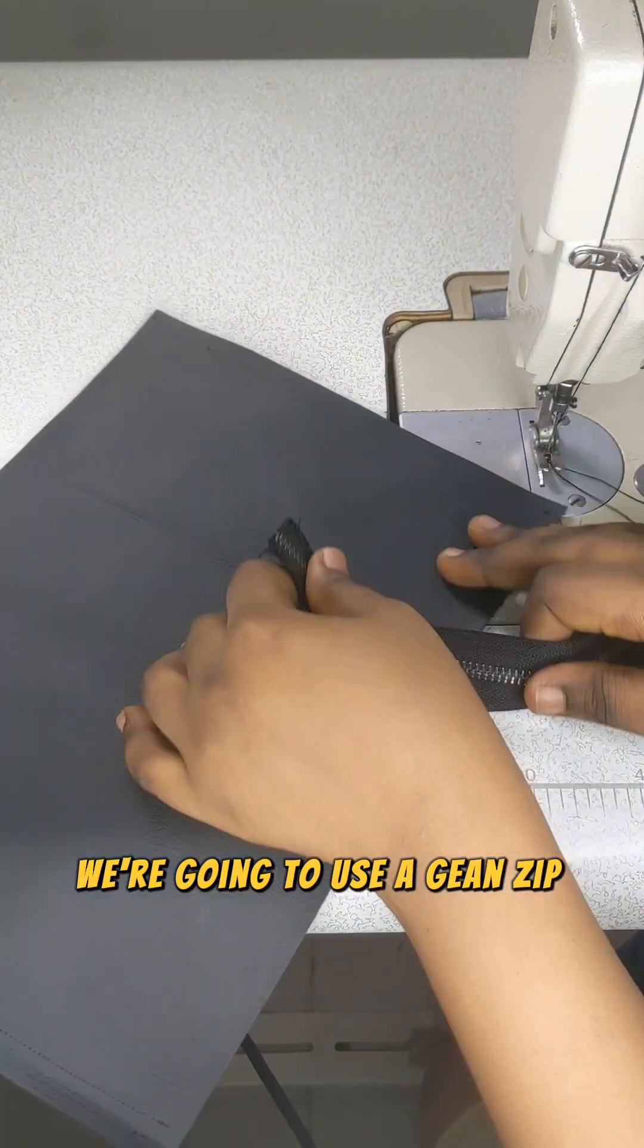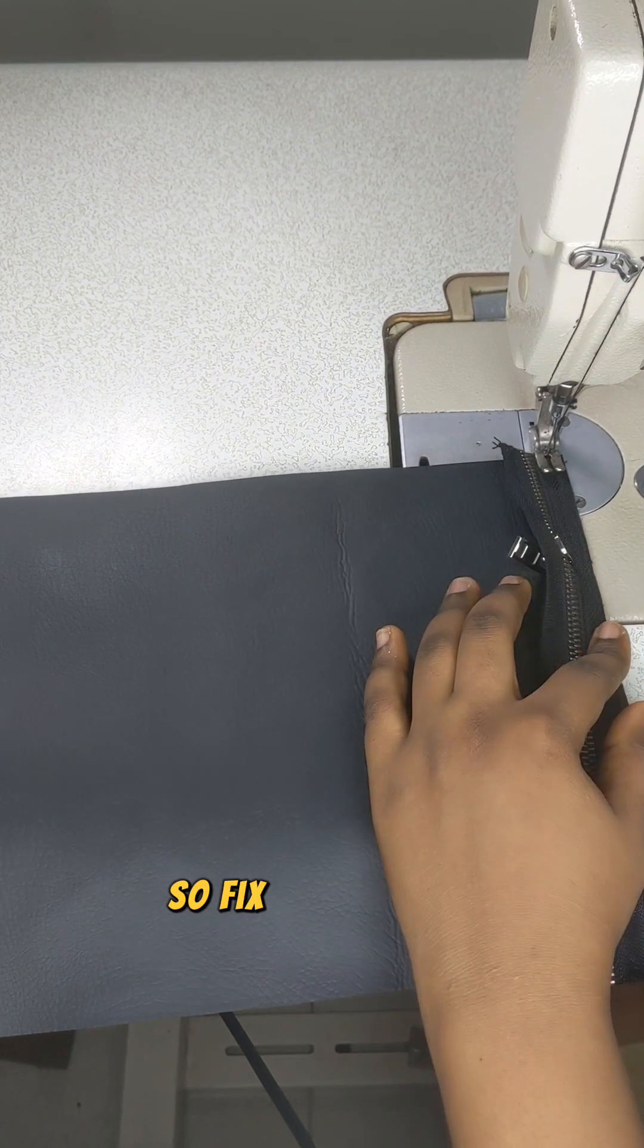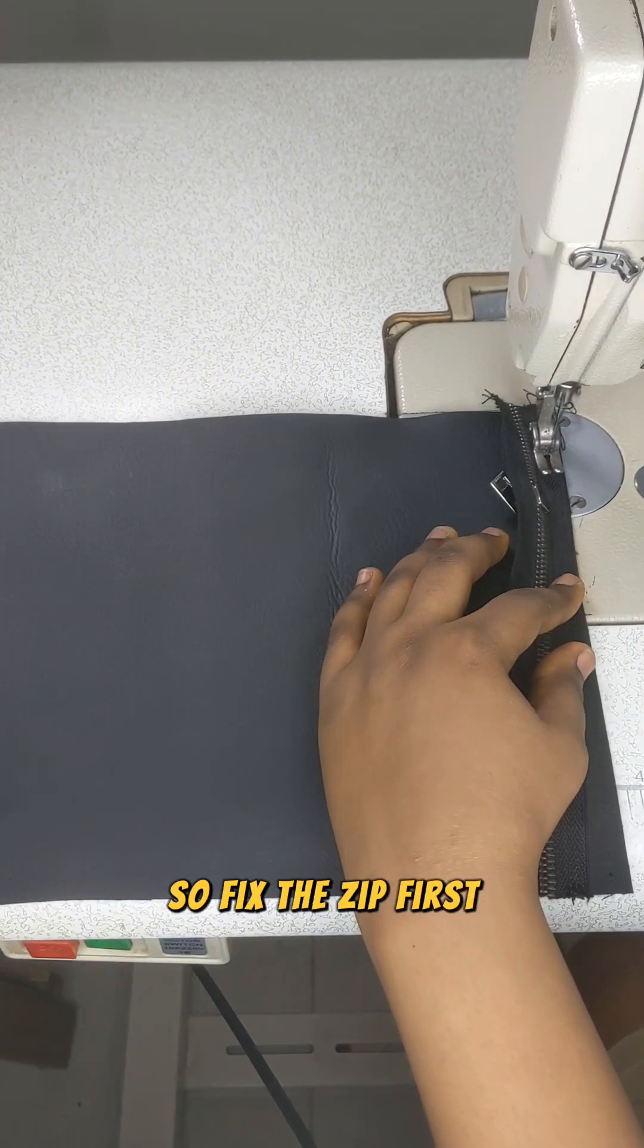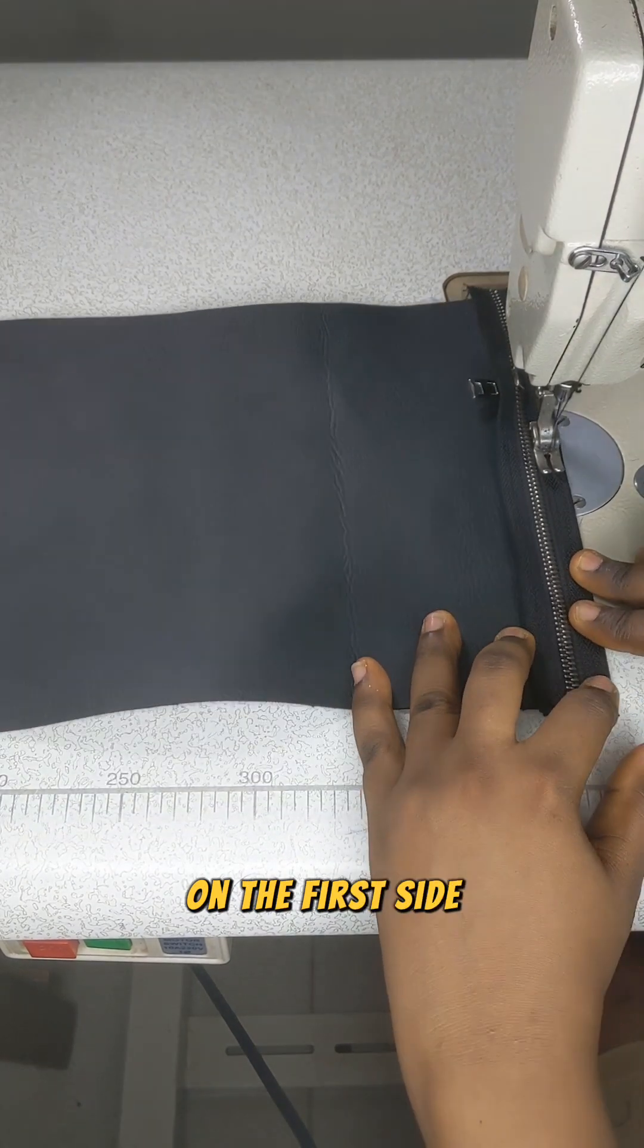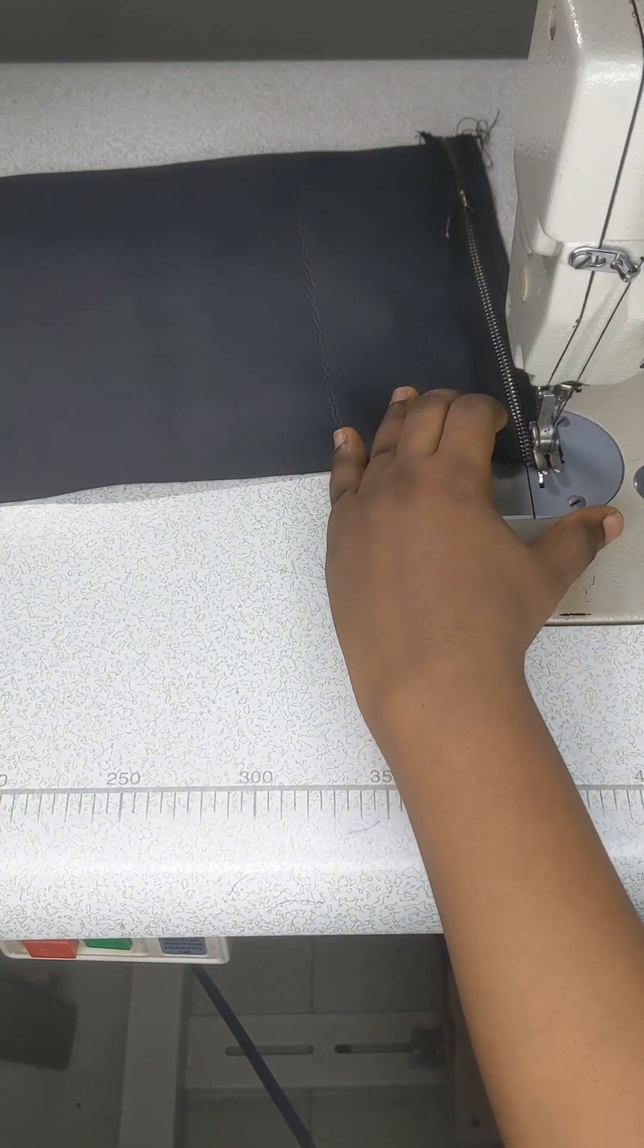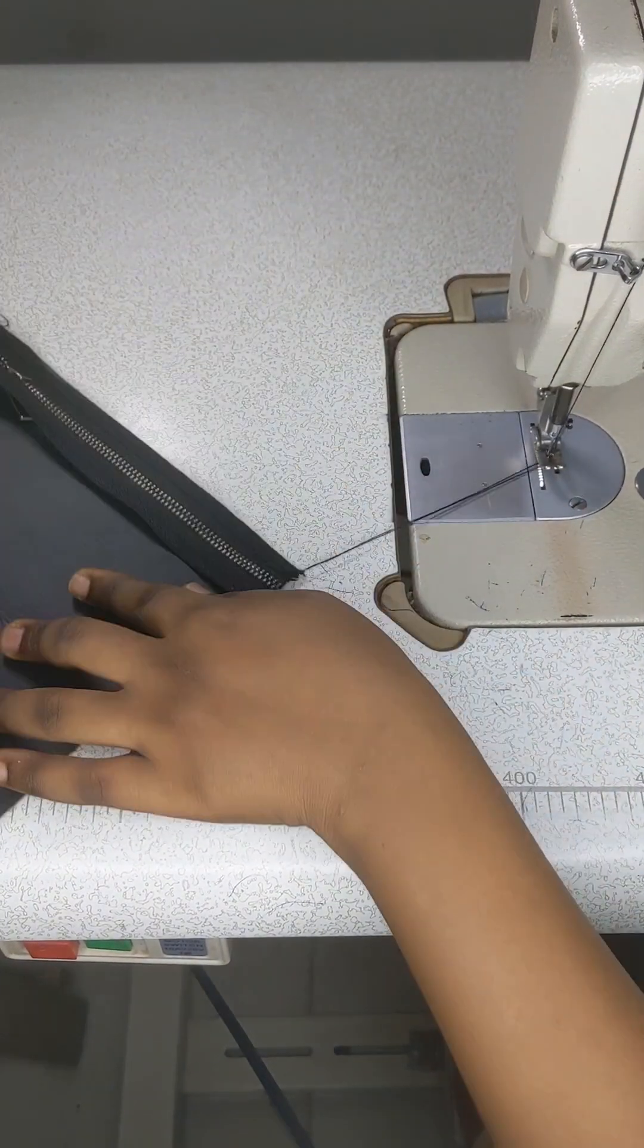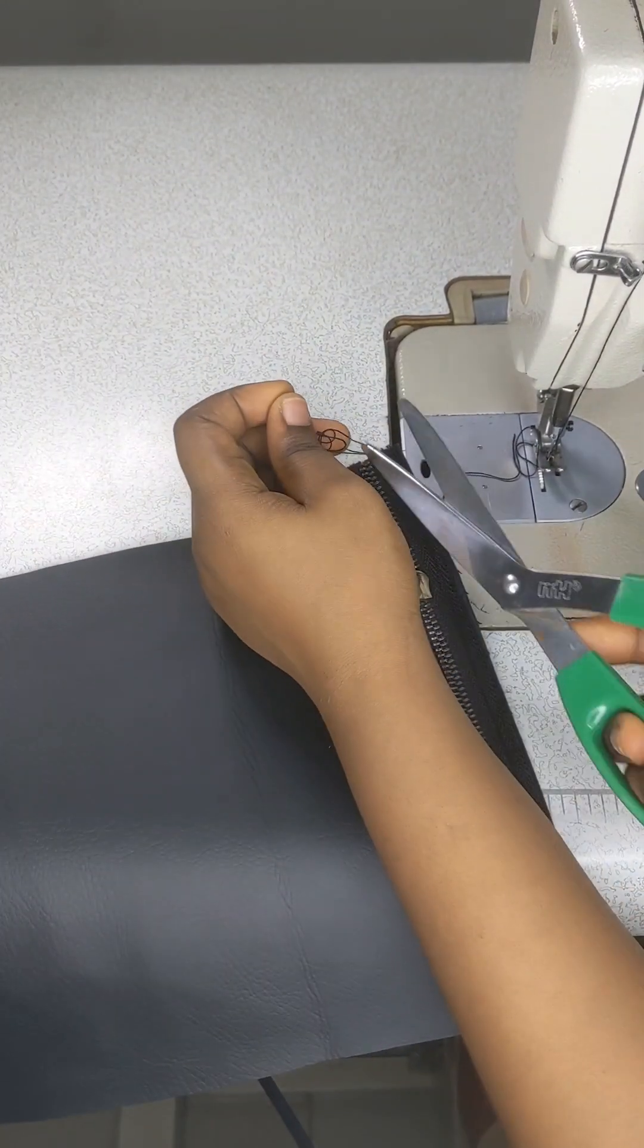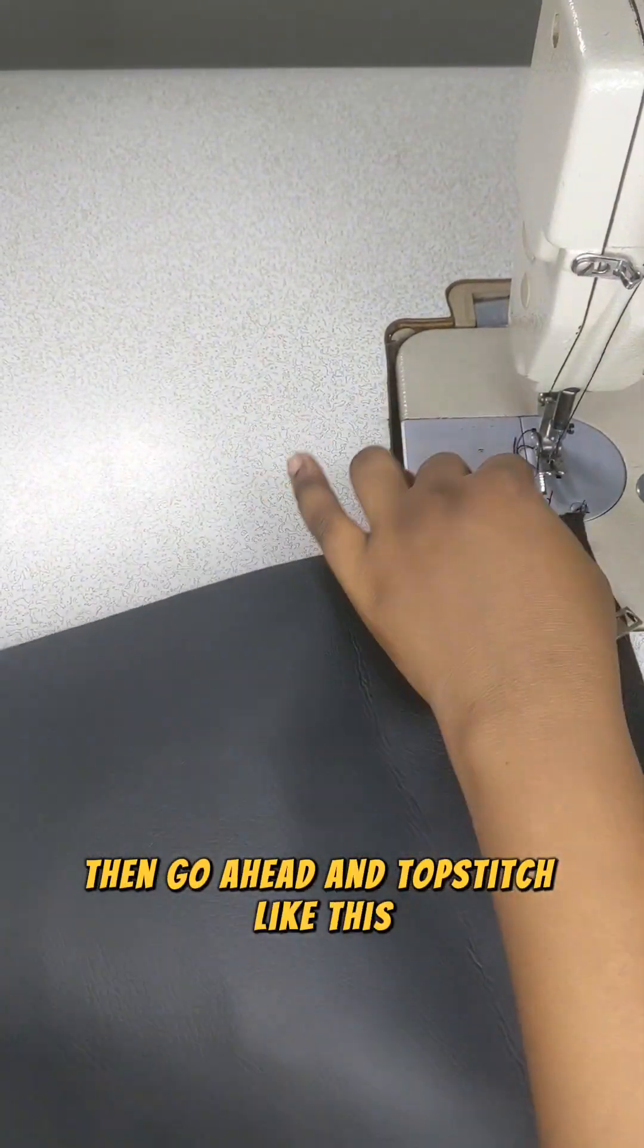So fix the zip first, then the first side. Then go ahead and top stitch like this.